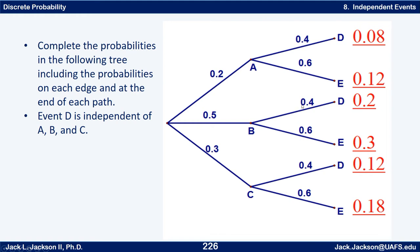Because of independence, every time you reach D it's 0.4 and every time you reach E it's 0.6, regardless of what came earlier. Then just multiply: 0.2 × 0.4 = 0.08, 0.2 × 0.6 = 0.12, 0.5 × 0.4 = 0.2, 0.5 × 0.6 = 0.3, and so on.